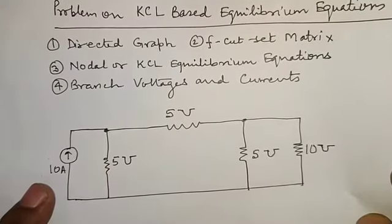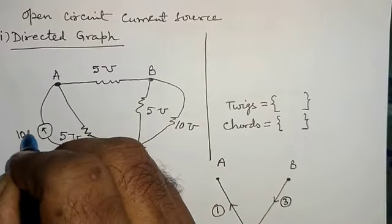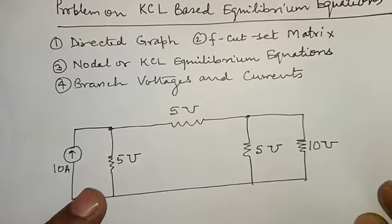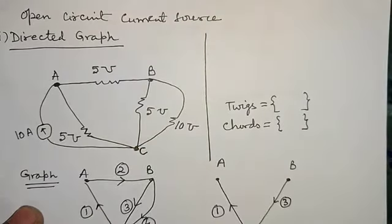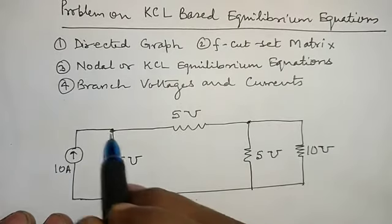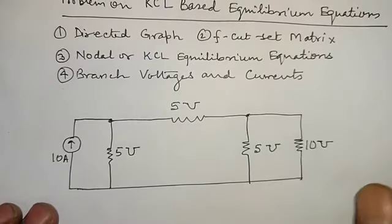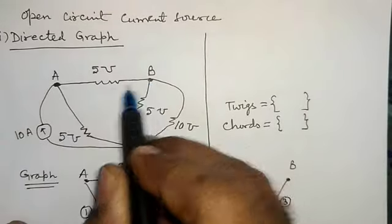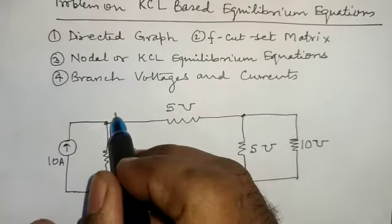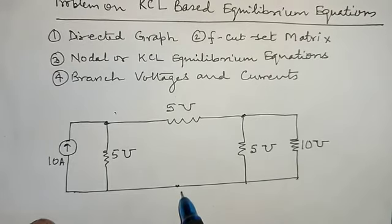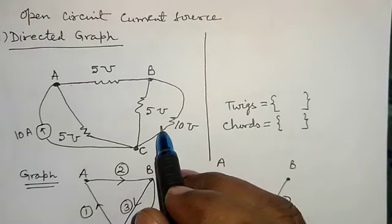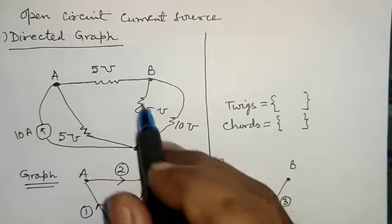There is a current source of 10 ampere, and in parallel with 10 ohm, there is admittance or conductance of 5 mho. If I consider this at point A and this as point B, then between point A and B there is 5 mho conductance. Between this reference and B point, between B and the reference, there will be two admittances: 5 ohm and 10 ohm. This is the simplified circuit diagram and on the basis of this, we will draw the directed graph.